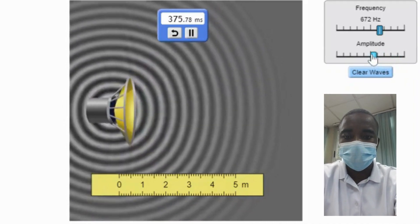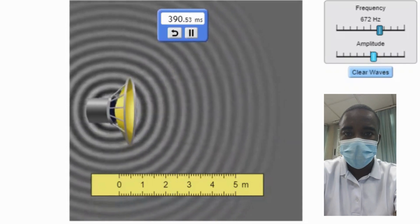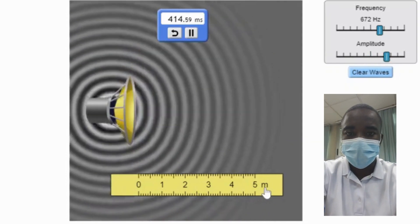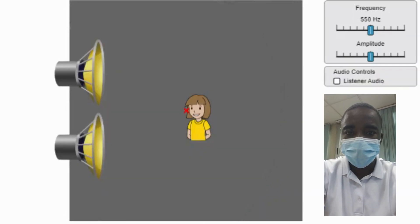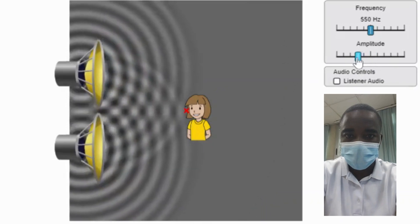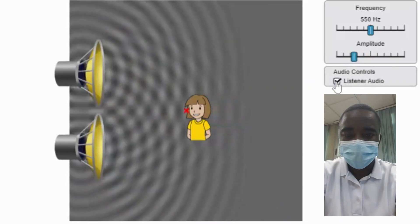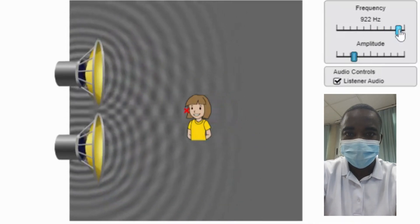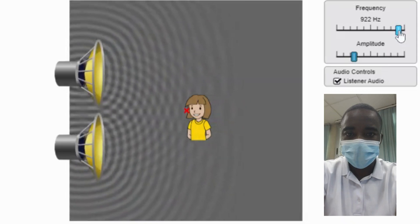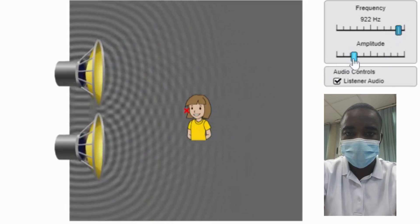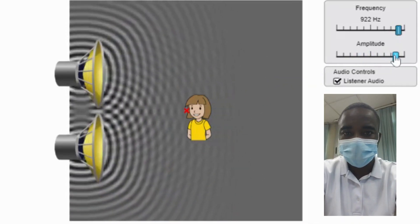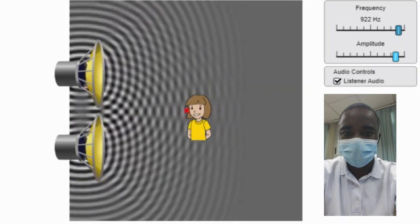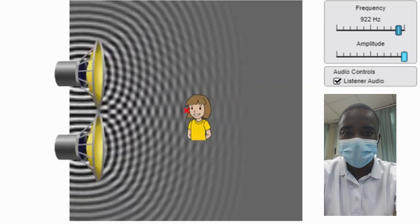The reflection simulation allows students to investigate the role of a reflective surface on the direction of wave propagation. When a sound wave encounters a reflective surface, it bounces off, changing its direction — this phenomenon is known as reflection. Students can interact with the simulation to observe how sound waves reflect off different surfaces. By adjusting the angle of incidence and the properties of the reflective surface, students can explore how these changes affect the direction of the reflected wave, helping them understand the principles of wave reflection and its importance in applications such as acoustics and soundproofing.